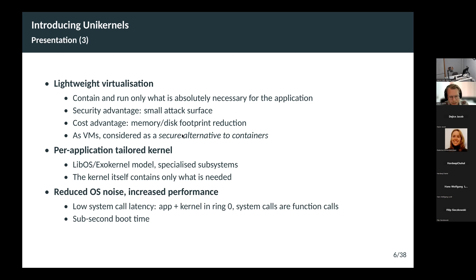You can also specialize for performance and resource consumption, getting increased performance for certain types of applications. Because the application and the kernel both run with full privileges, system calls are actually function calls — much, much faster. The system call latency is almost negligible compared to hundreds of cycles in a traditional operating system. In a traditional OS, a system call involves an interrupt, a page table switch, and a TLB flush — very costly. In a unikernel, it's just a traditional function call. Some system-intensive applications really benefit from this optimization.